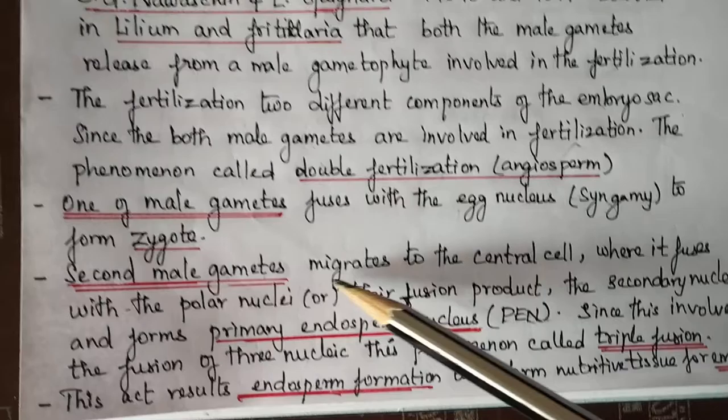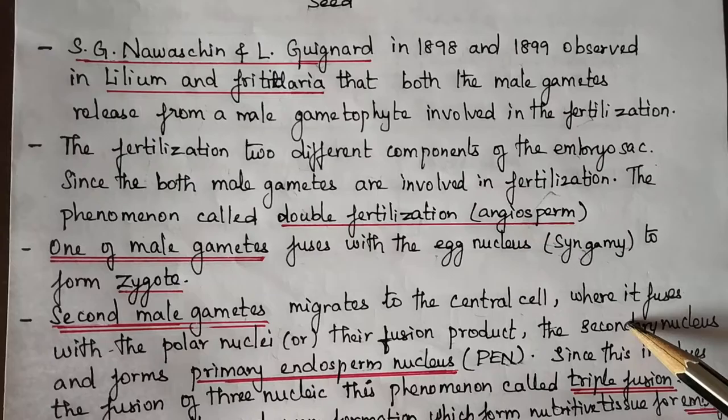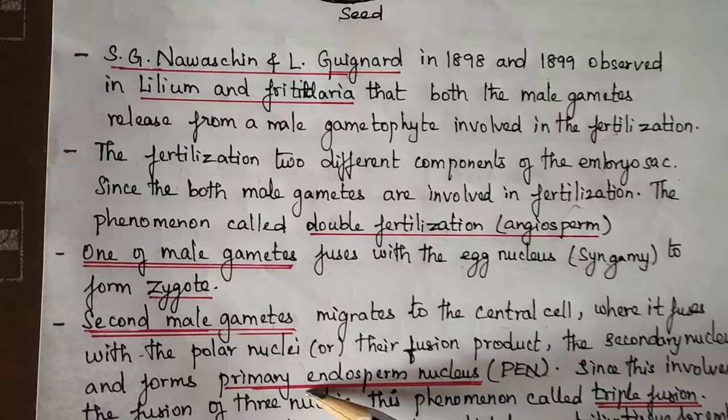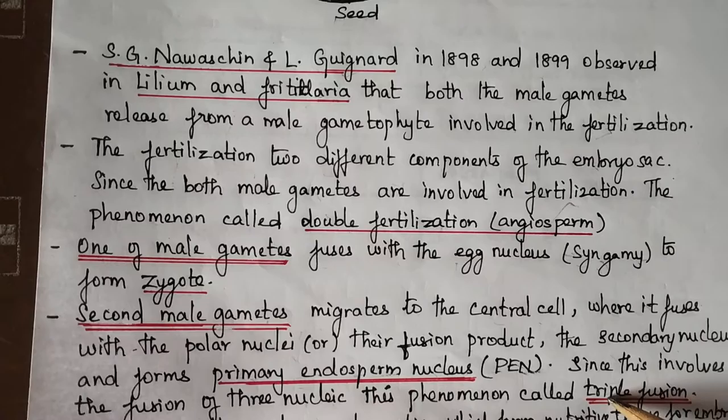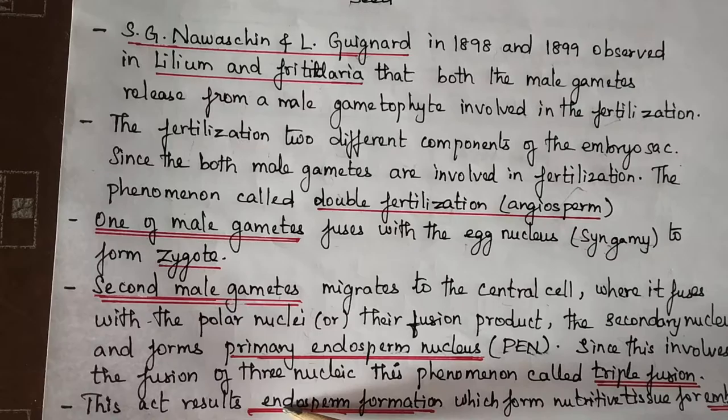The second male gamete migrates to the central cell, where it fuses with the polar nucleus. The fusion product is the secondary nucleus, which forms the primary endosperm nucleus. Since this process involves the fusion of three nuclei — one male gamete nucleus, one egg nucleus, and the secondary nucleus — this process is called triple fusion.